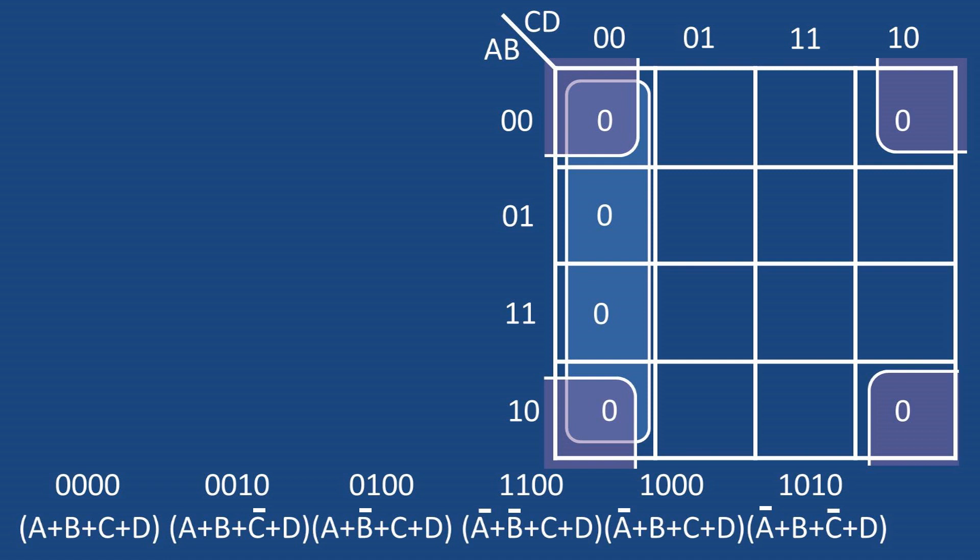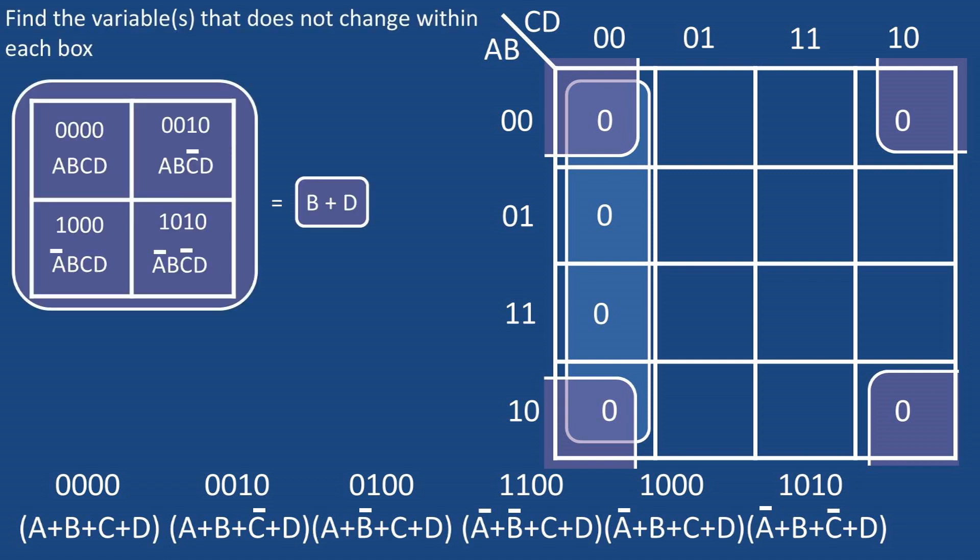We take those variables and add them together, then we multiply those variables times the other boxes of variables. So for the box grouping the four zeros together, the only variables that do not change within this box is B and D, so the box is reduced to the expression B+D, or B OR D.